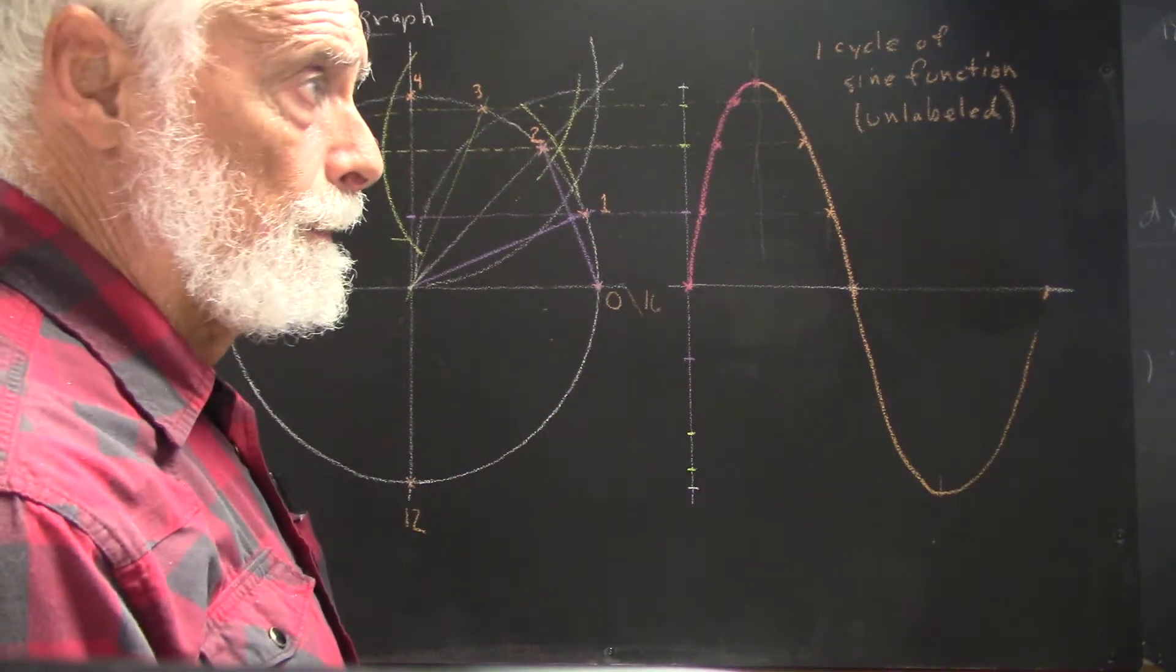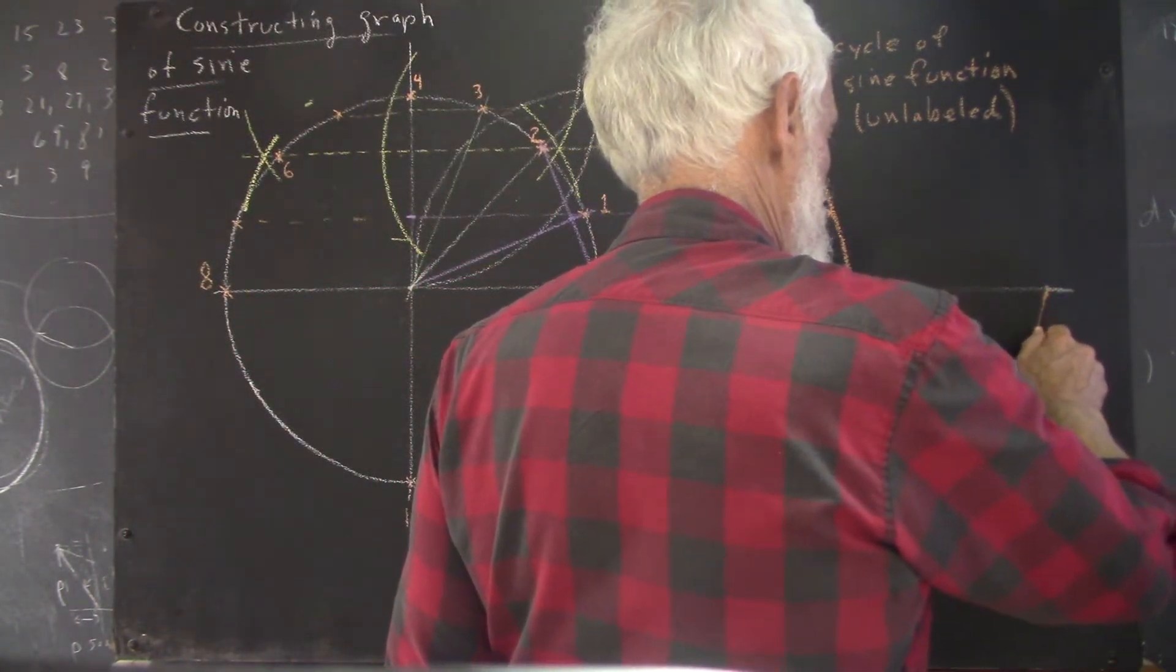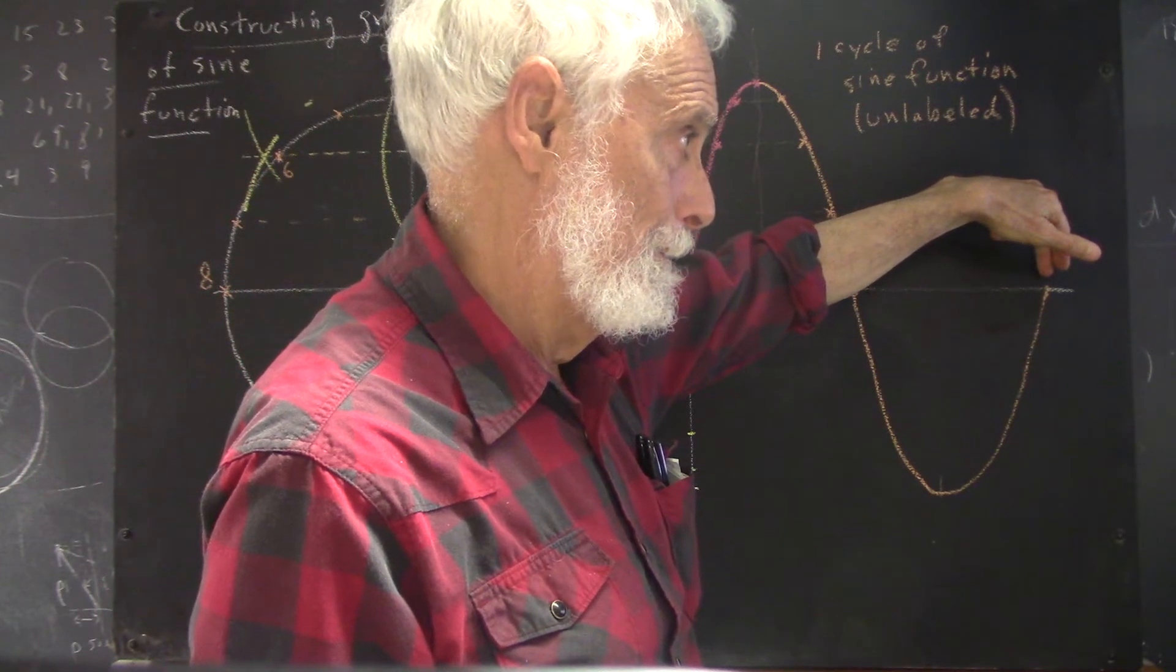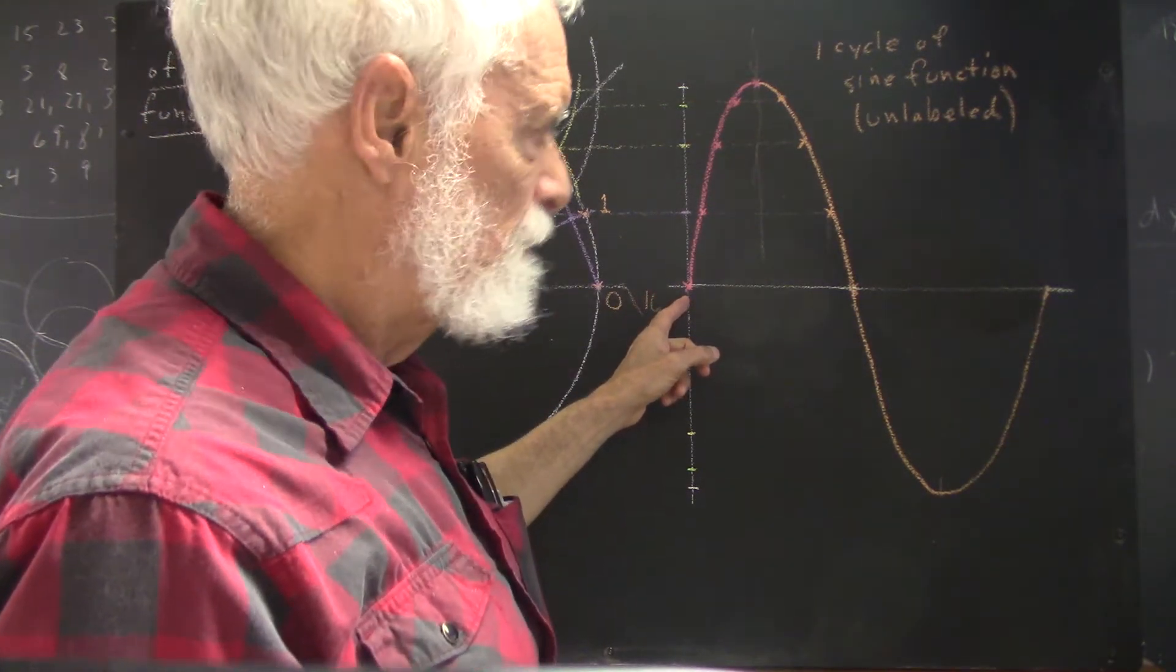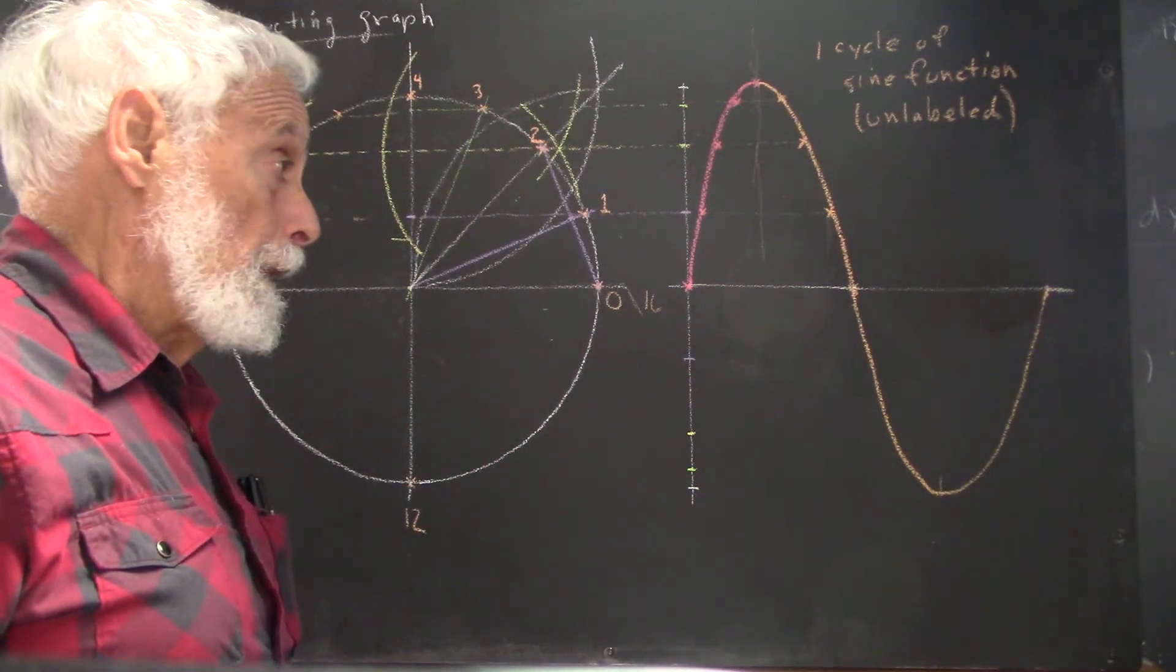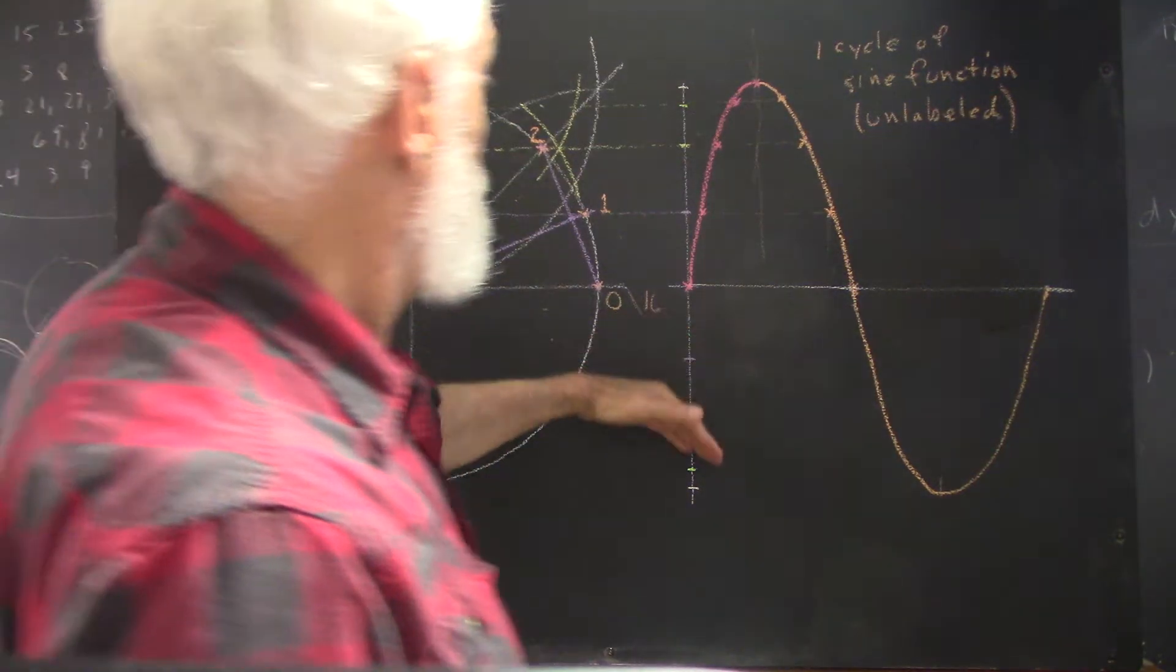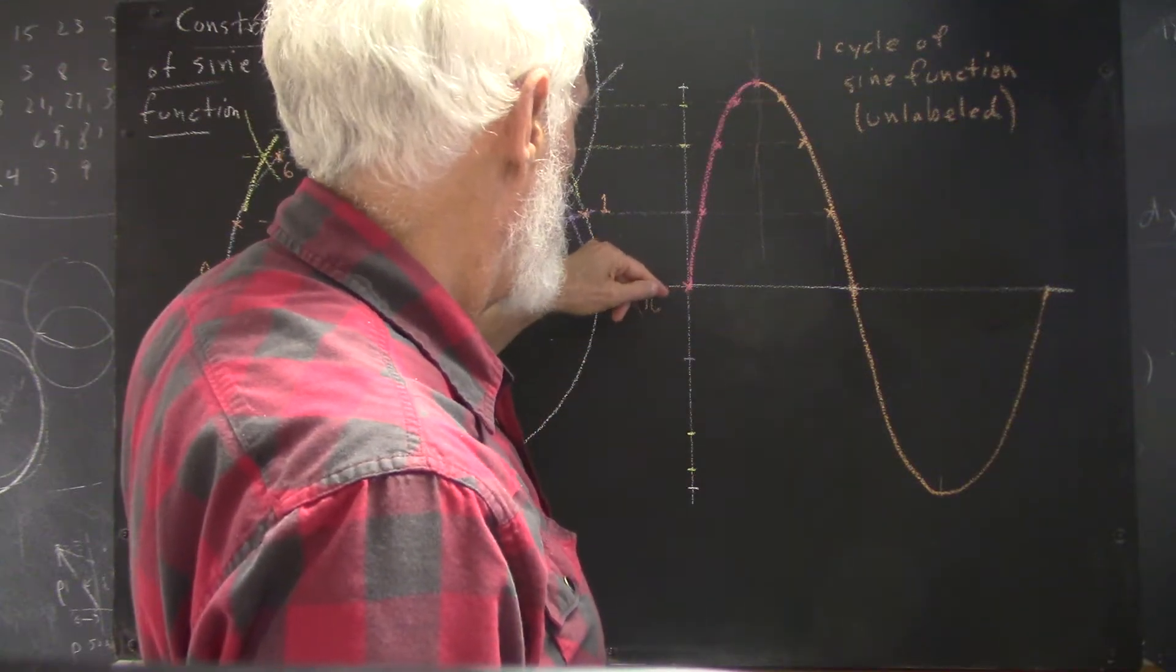Now the question is how might we label this? Well, the labeling is totally arbitrary. I could label this portion of the x-axis from zero up through 479 miles. Or I could label it from zero to three-tenths of a second. It would have different meanings. I could label it from anything to anything, any scale at all that I want. I can use any scale to label this graph.